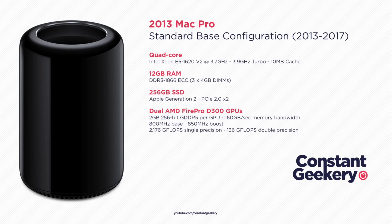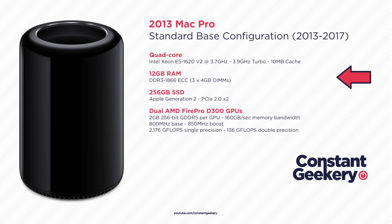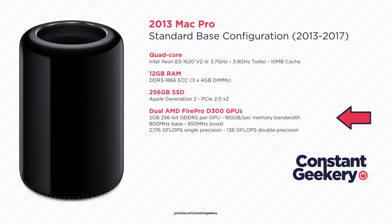At launch there were four choices of CPU. First of all we had the quad-core model. This was the base model that was launched in 2013 and it ran up to early 2017. It had the quad-core Xeon E5 1620 version 2 CPU, 12 gigabytes of ECC DDR3 1866 RAM, a 256 gigabyte SSD, and dual AMD Fire Pro D300 GPUs, each having 2 gigabytes of RAM. So that's the base model.